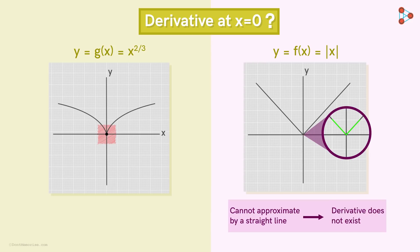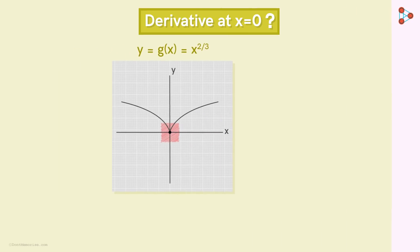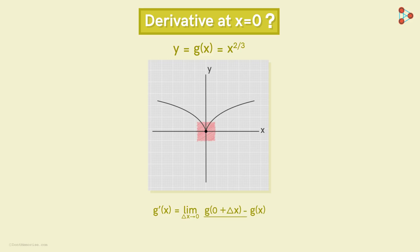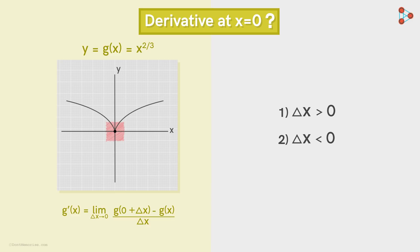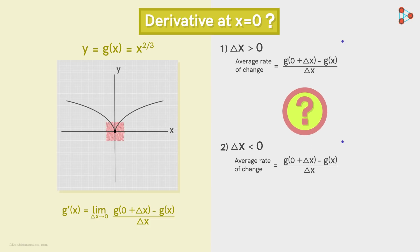So what does this tell us about this function at x equal to zero? If we zoom in here, we can see that it looks like a vertical line. So does this mean the derivative exists at this point? Let's see. We are familiar with how to find the derivative of a function. In order to find this limit of the average rate as delta x tends to zero, we consider two cases: first when delta x is greater than zero, and second when delta x is less than zero.